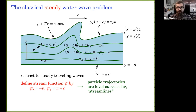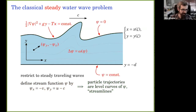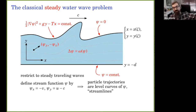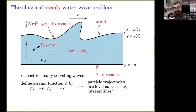I want to reduce the number of dependent variables. Instead of tracking u and v, I just track ψ. It also turns out you can eliminate the pressure. The kinematic conditions now just say that the surface and bed should be level curves of ψ. Since ψ only appears as a gradient, we can shift it to be zero at the surface without loss of generality.